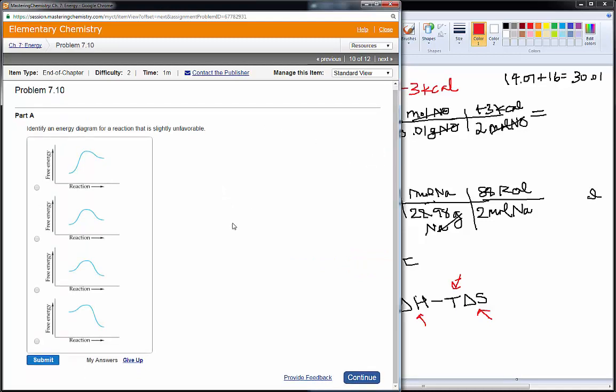Energy diagram for a reaction that is slightly unfavorable. So, this is delta G, free energy here, on the y-axis. And then, as the reaction proceeds on the x-axis. And if it's unfavorable, then the delta G is positive. That's the difference between the reactants and the products. So, if it goes up, then that would be positive. Up, that's positive. This goes down a little bit. That goes down a lot. So, these would be negative delta Gs. Those would be exergonic, spontaneous.